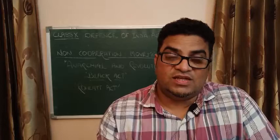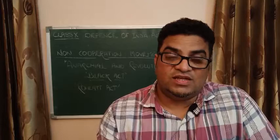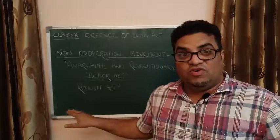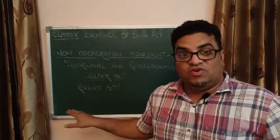Just because of these provisions, this act came to be known as the Black Act. Its actual official name was the Anarchical and Revolutionary Crimes Act, but since it was proposed by Sir Sidney Rowlett, who headed the Sedition Committee, it came to be popularly known as the Rowlett Act.